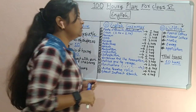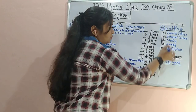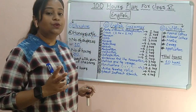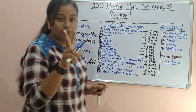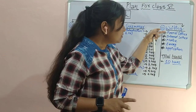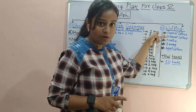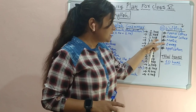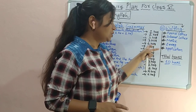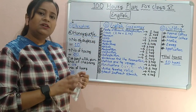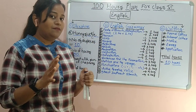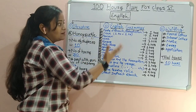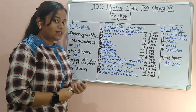Then coming to the writing portion. Writing consists of letters, which are broadly divided into two parts — formal letter and informal letter. Then notice, essay, and application. Approximately it will take ten hours. So that was my 100-hour plan for your class.